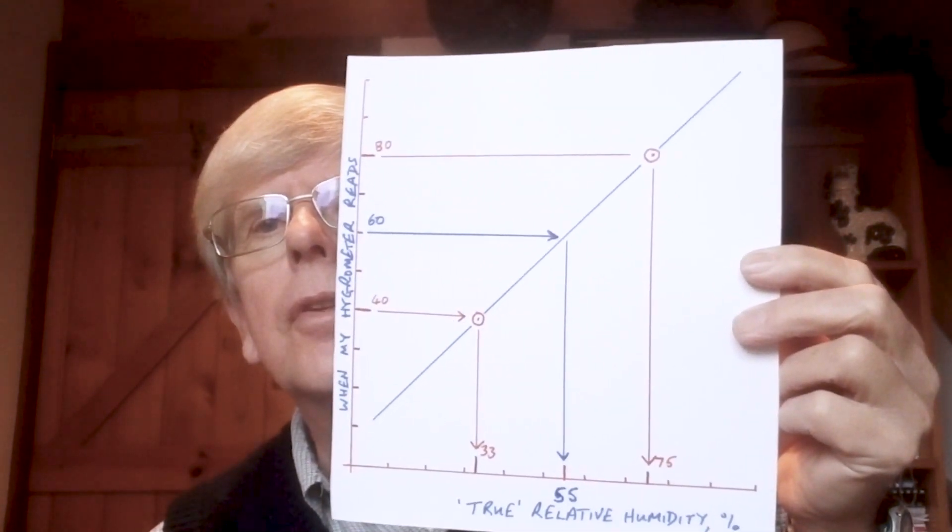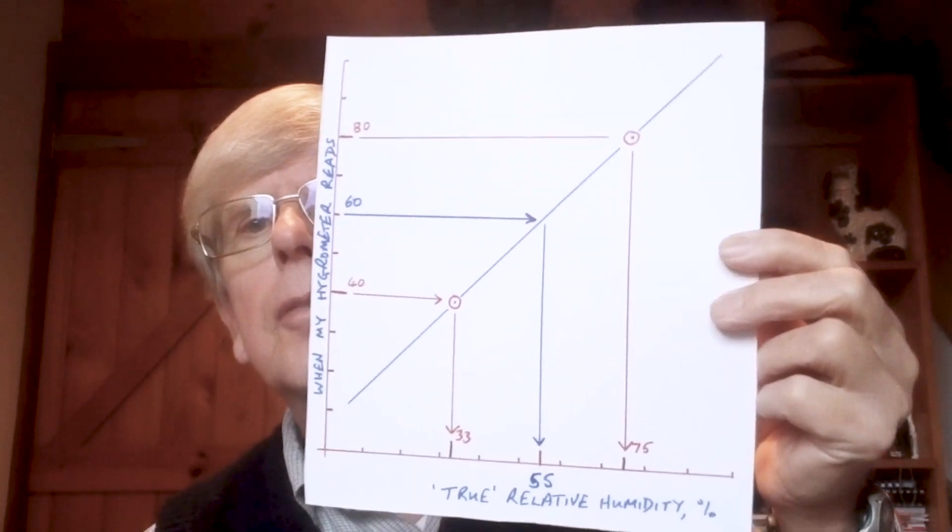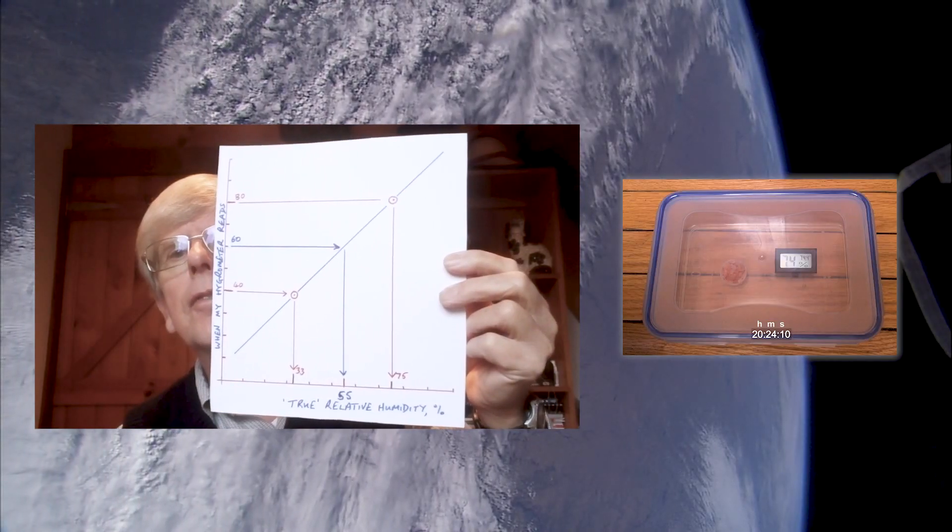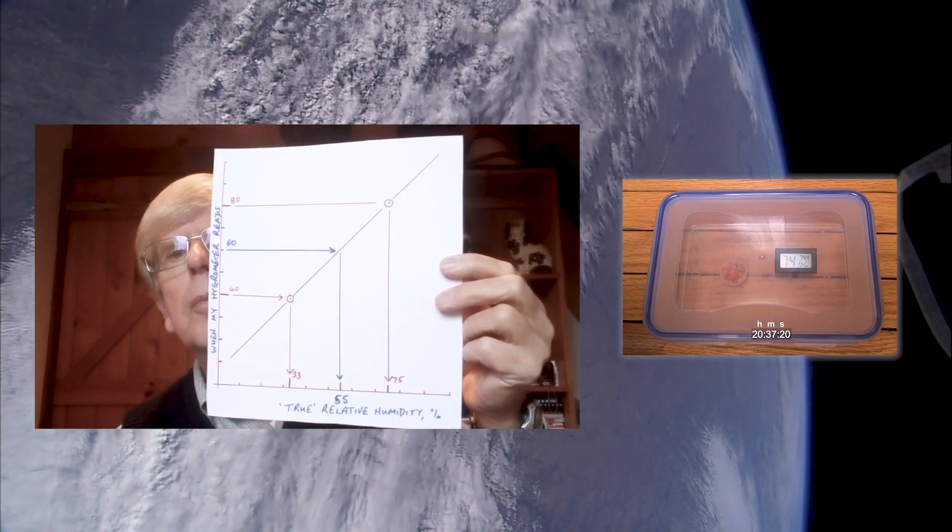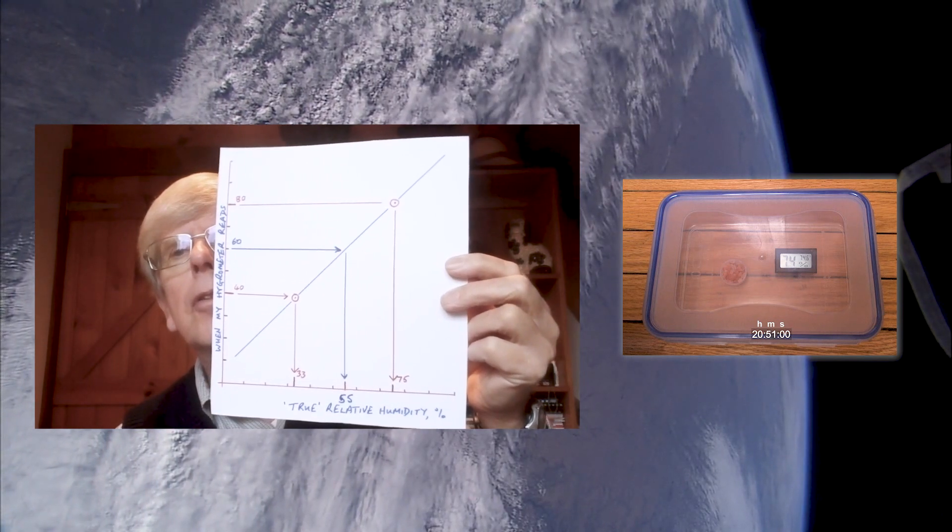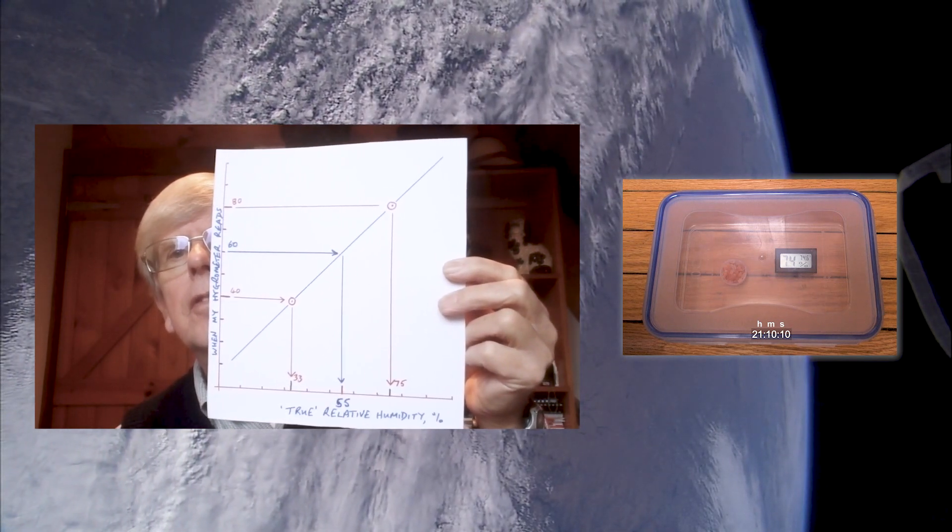And you read that off the graph, just like that. And so if it's a customer saying, I want stuff at 55% relative humidity when you deliver it to me, then you've got to set it up and wait until your hygrometer reads 60.